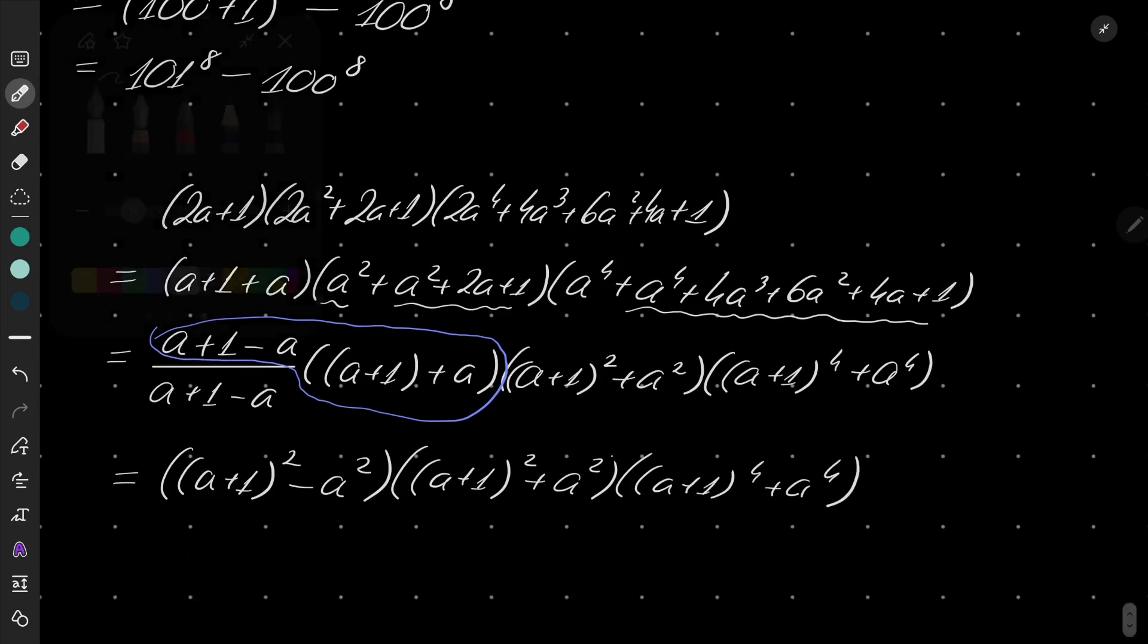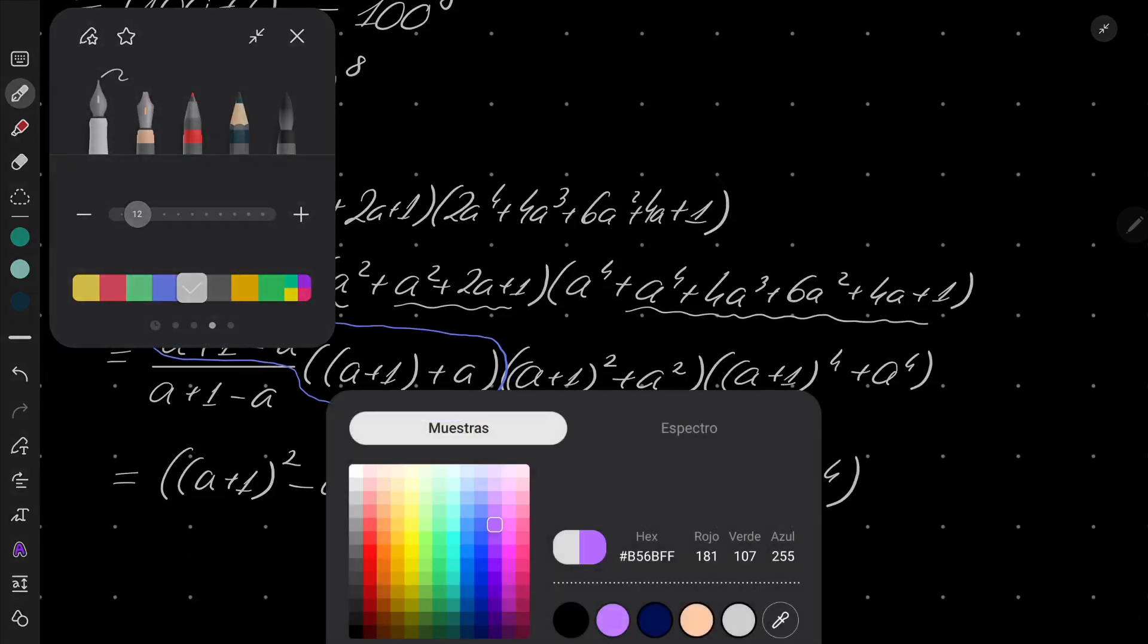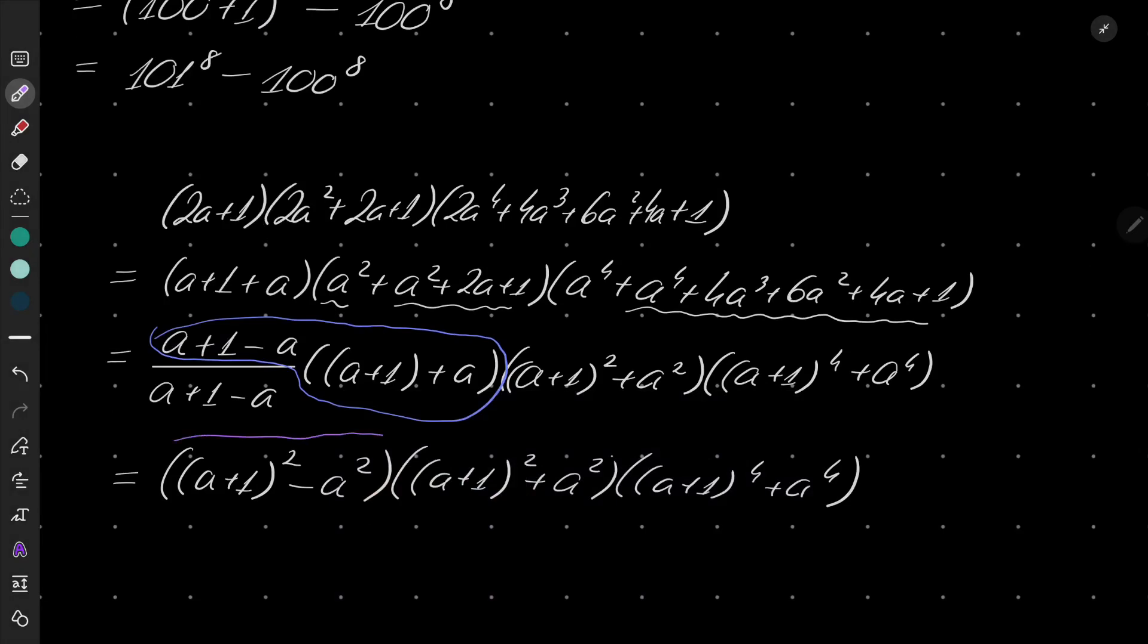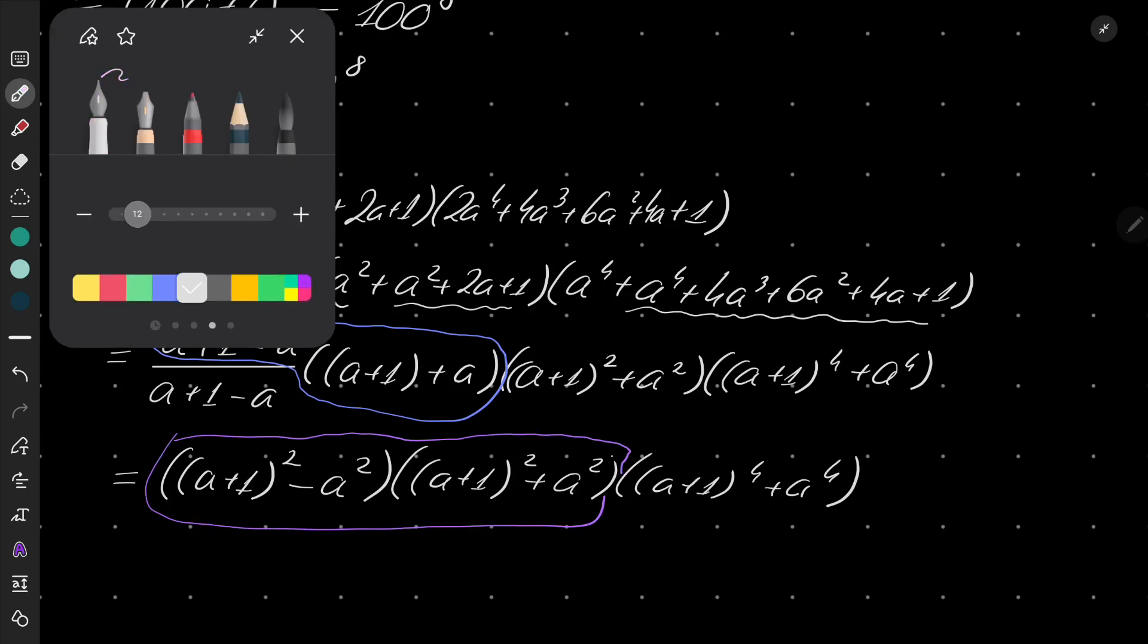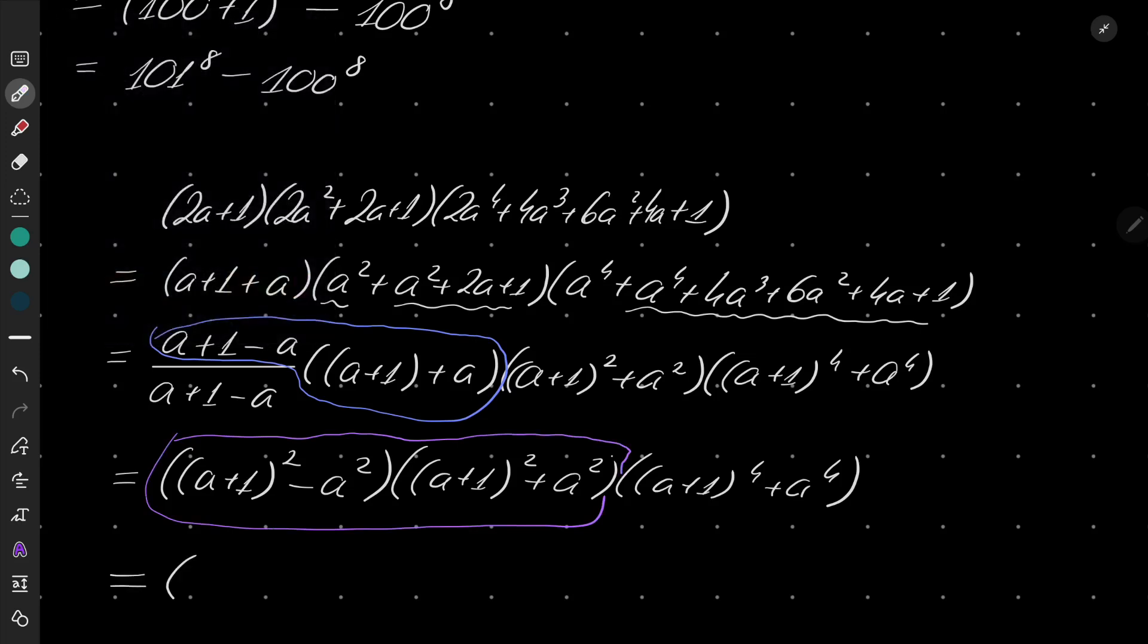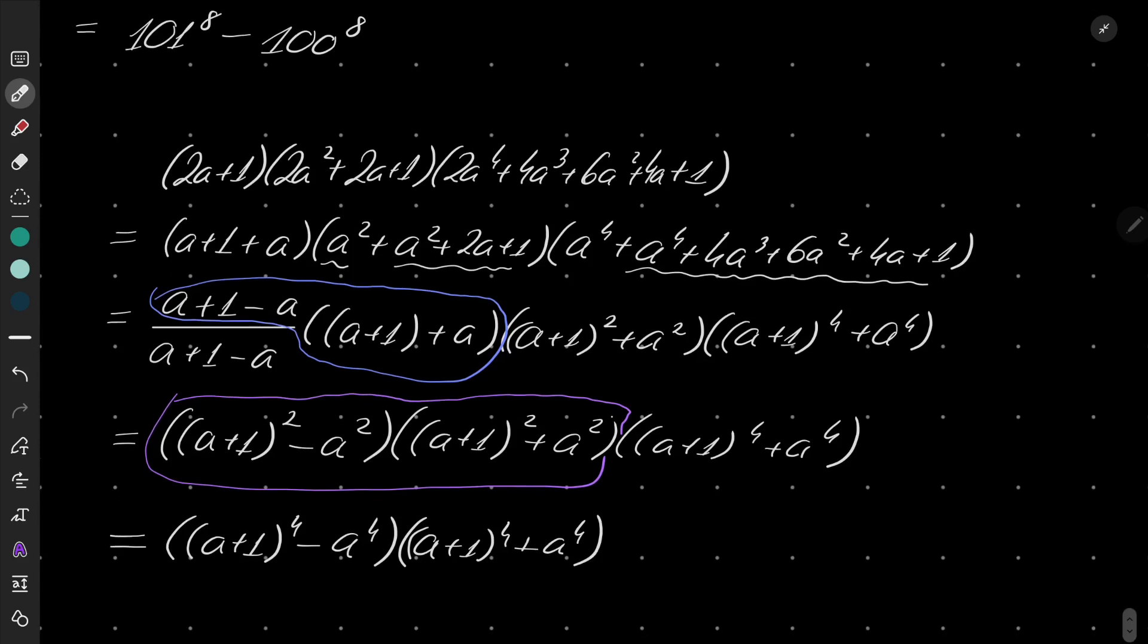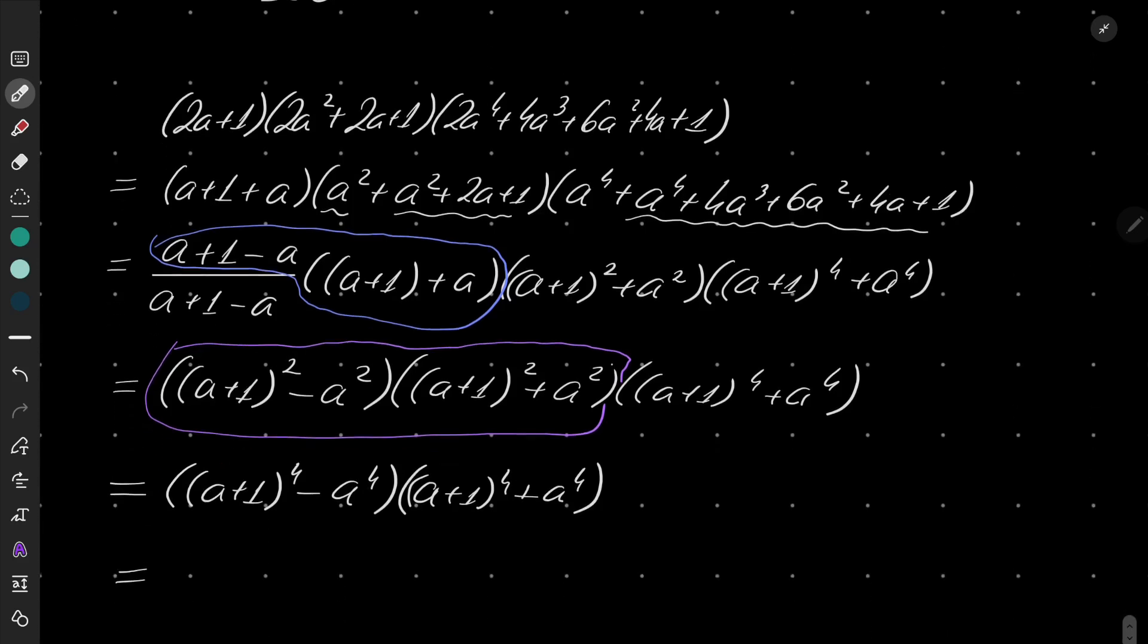So we have (a+1)² - a². And this part, again the same trick. Here we have something minus something times something plus something. This part will become (a+1)⁴ - a⁴.